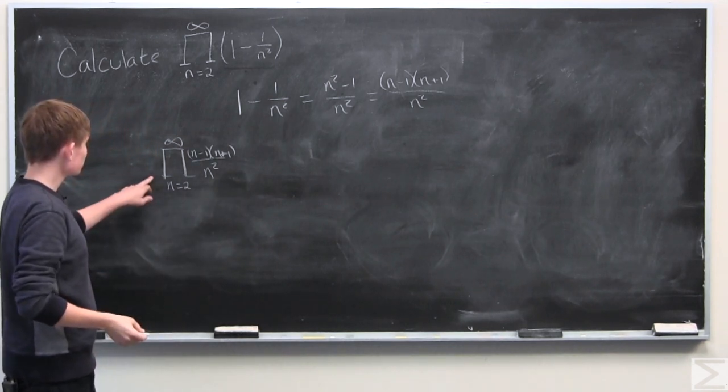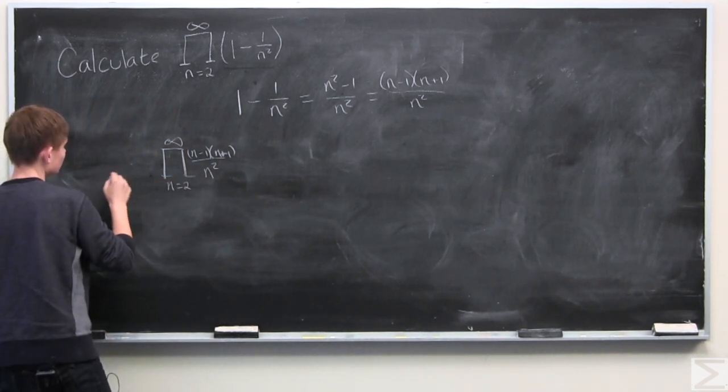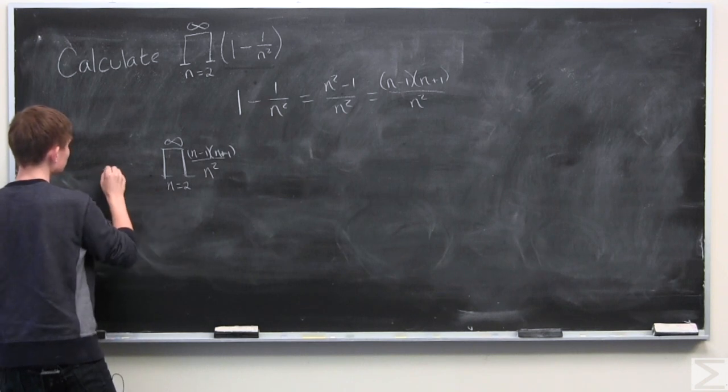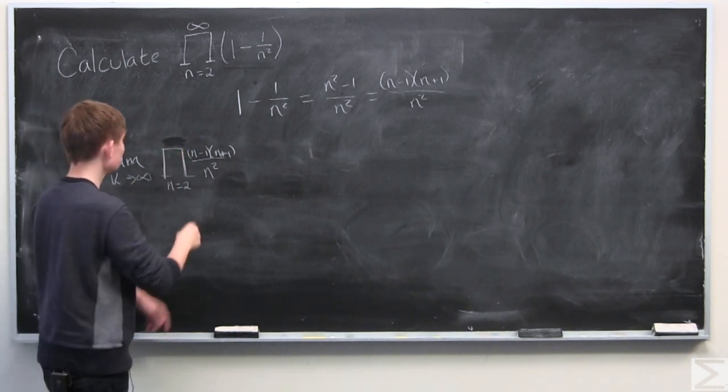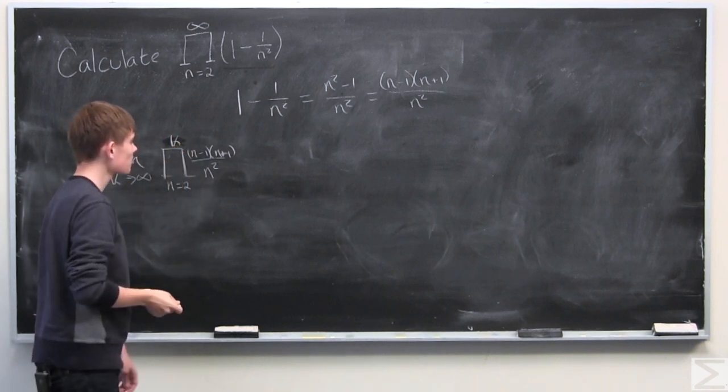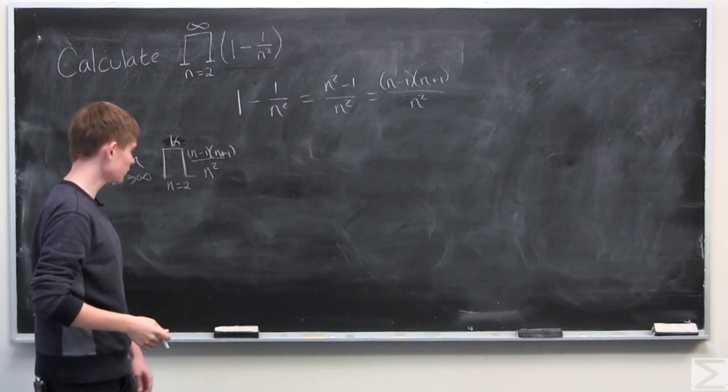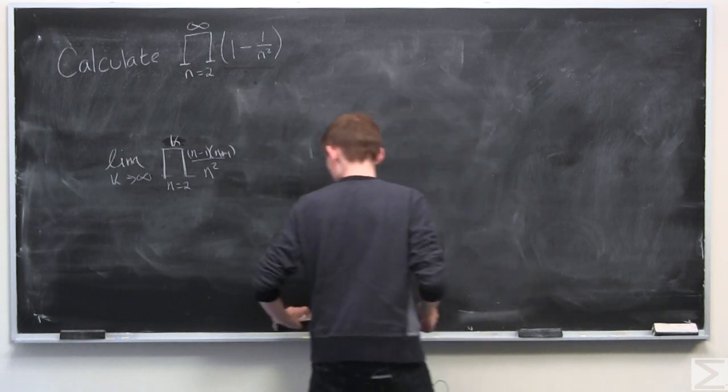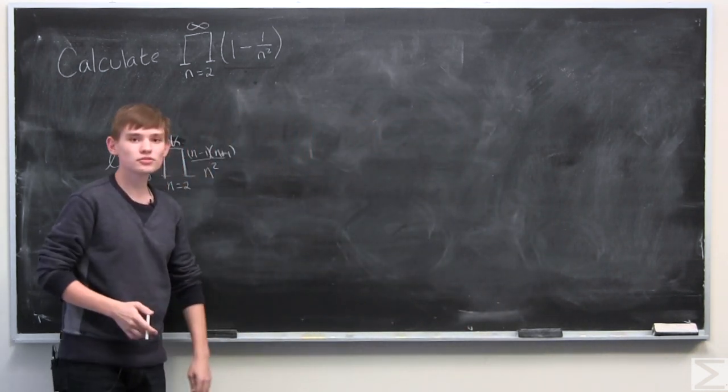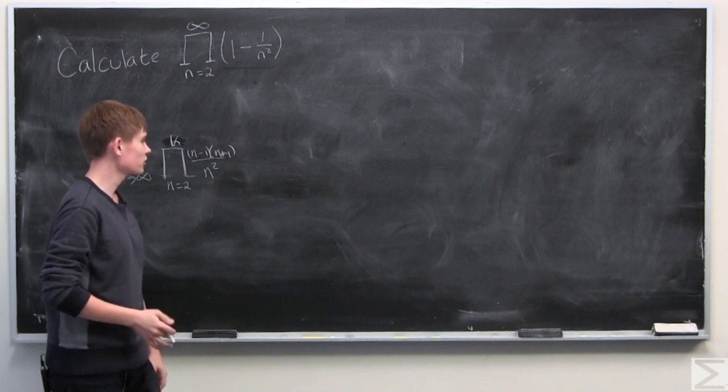And from here what we can do is say that this is equal to the limit as k approaches infinity of the product from n equals 2 to k. And a good place to start with finding the limit is to look at the partial products.